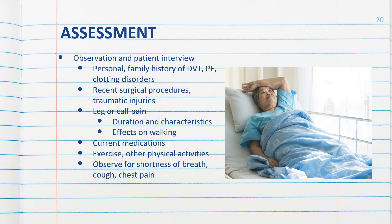Let's go on and talk about the nursing process beginning with assessment. The nurse should assess patients at risk for venous thrombosis for signs, symptoms, and risk factors, obtaining objective and subjective data. In the observation and patient interview, review personal and family history of DVT, PE, and clotting disorders. Discuss any recent surgical procedures or traumatic injuries. Note complaints of leg or calf pain, duration and characteristics of pain, and the effect on the patient's ability to walk.